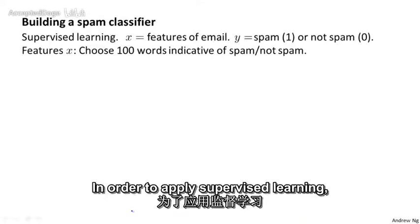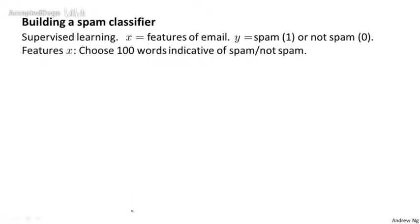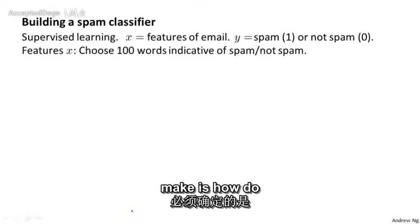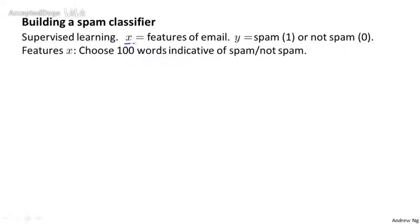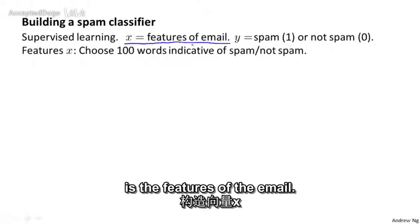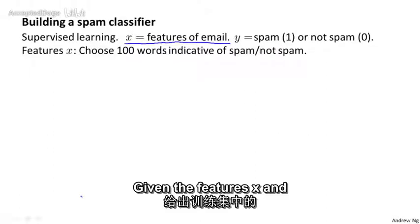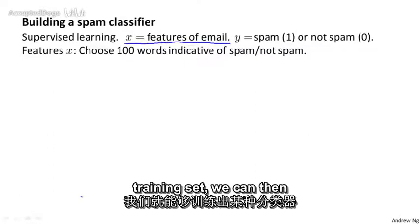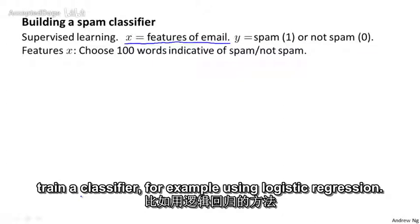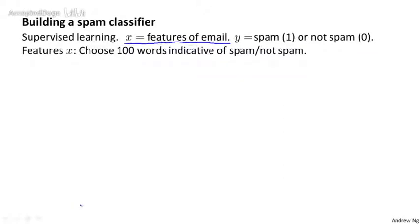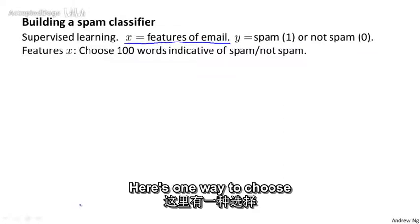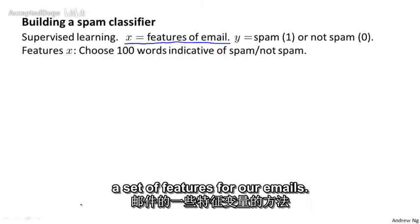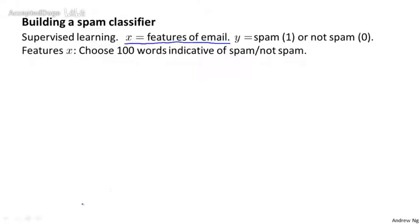How do we build a classifier using supervised learning to distinguish between spam and non-spam? In order to apply supervised learning, the first decision we must make is how do we want to represent x — that is, the features of the email. Given the features x and the labels y in our training set, we can then train a classifier, for example, using logistic regression.